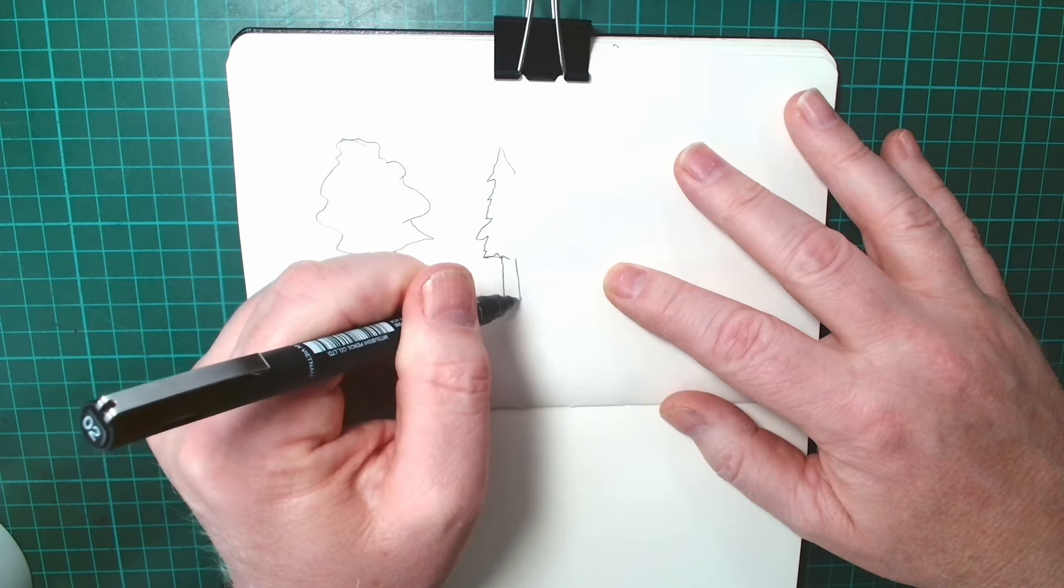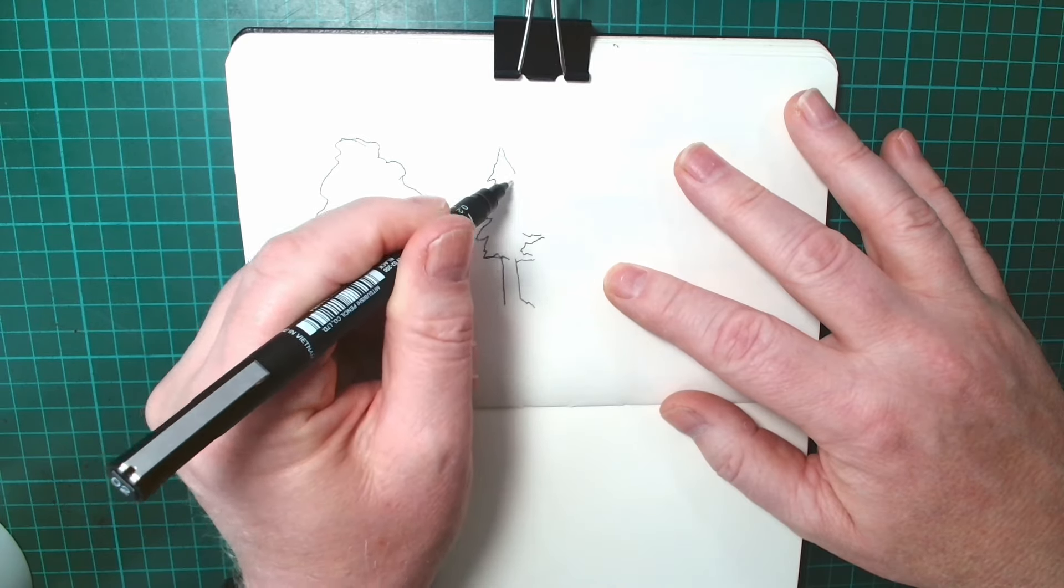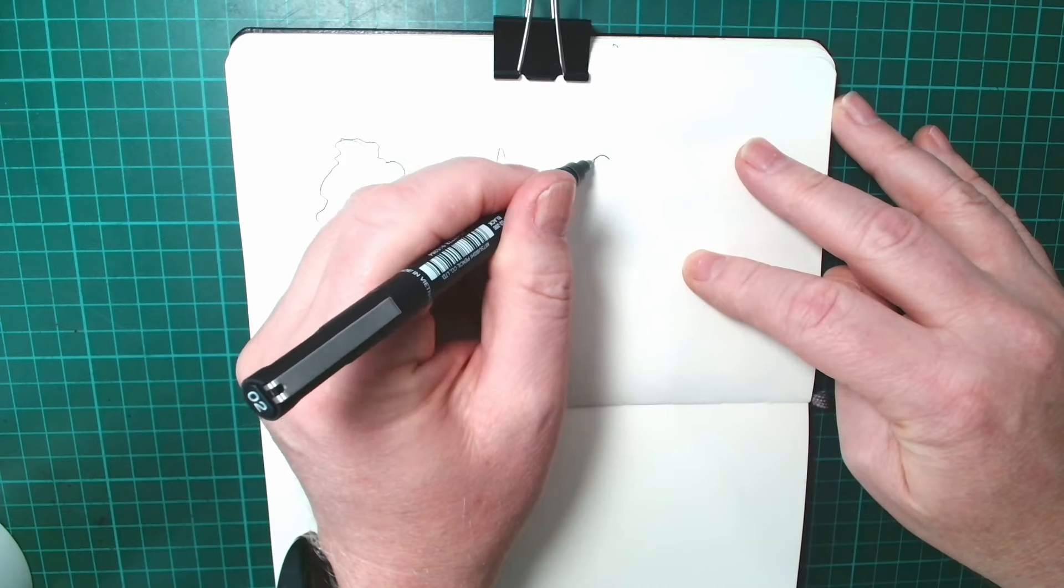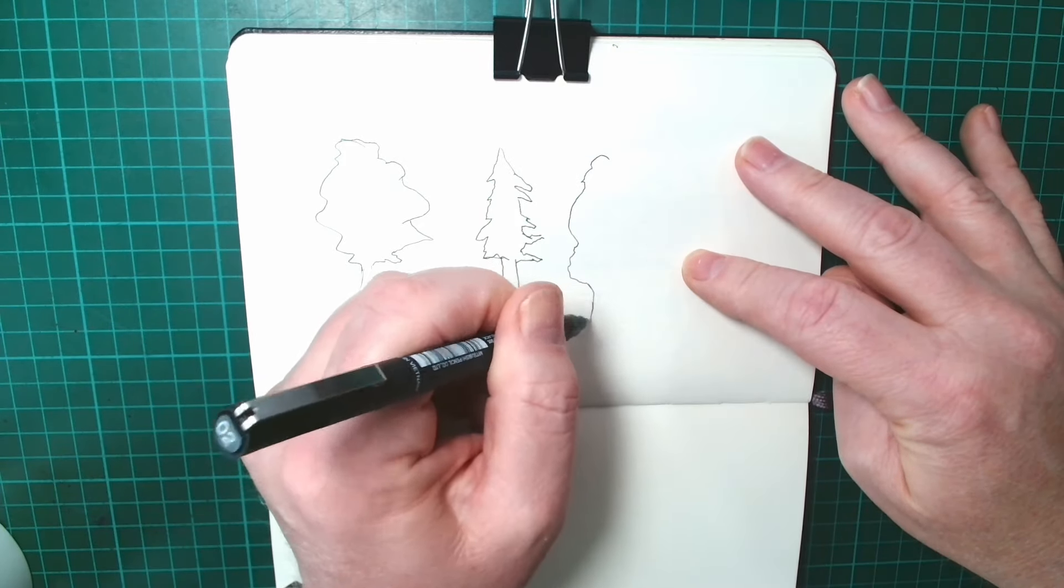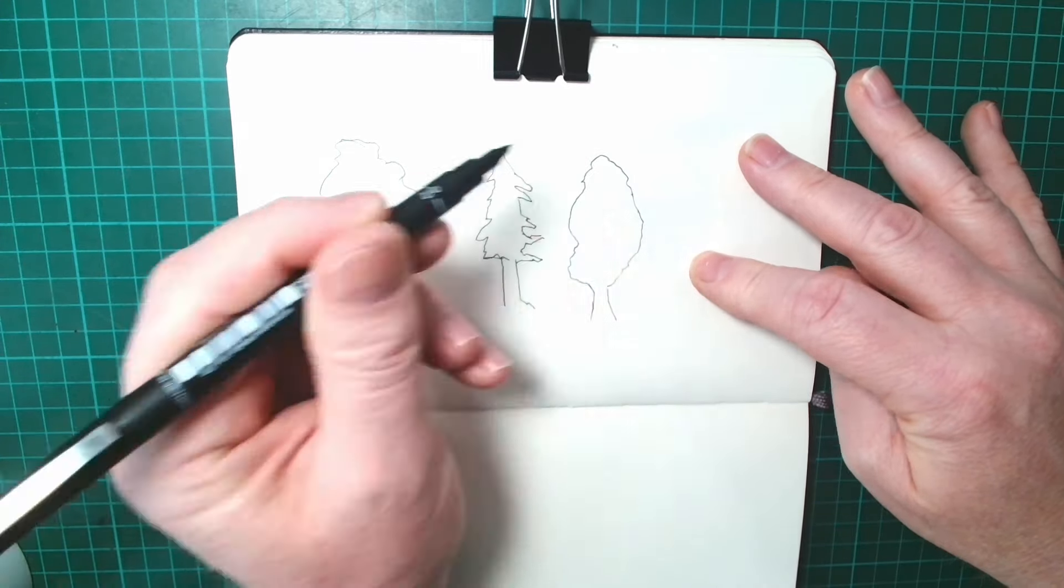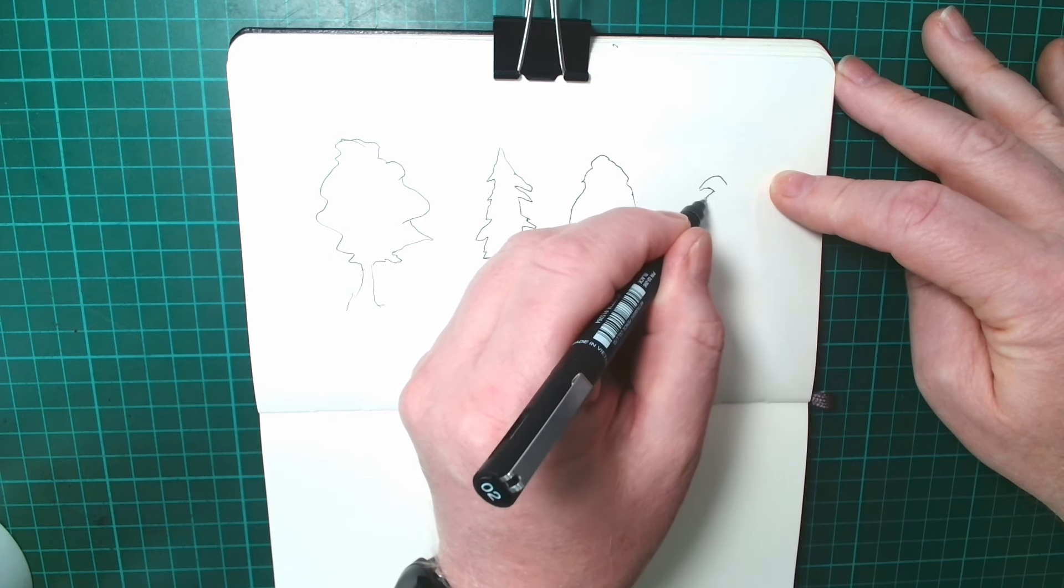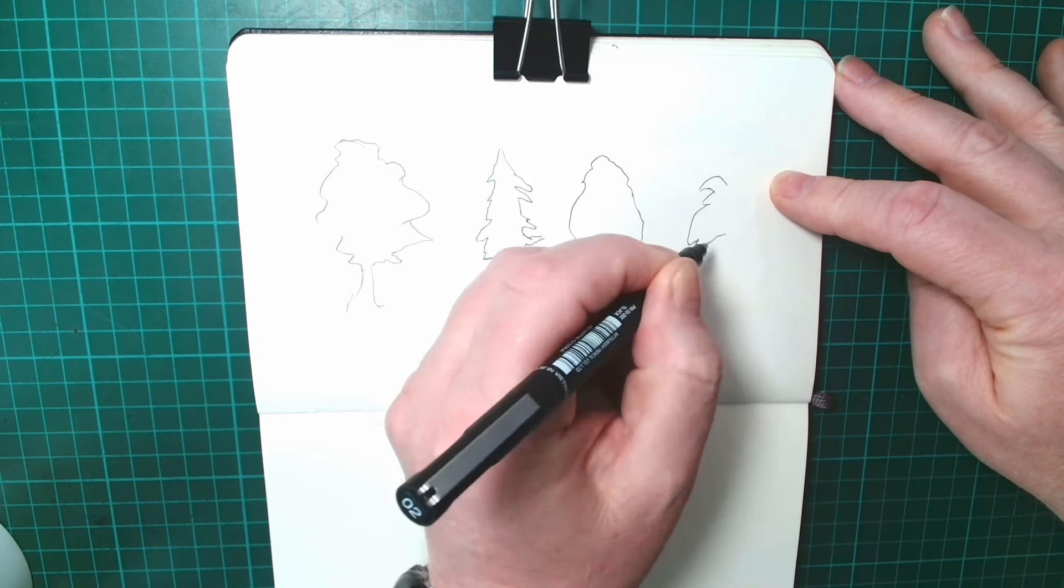Once you actually look and study the tree itself for a moment or two, it really isn't too difficult to get an idea of what the general shape of that tree is and how to get the outline from that tree.